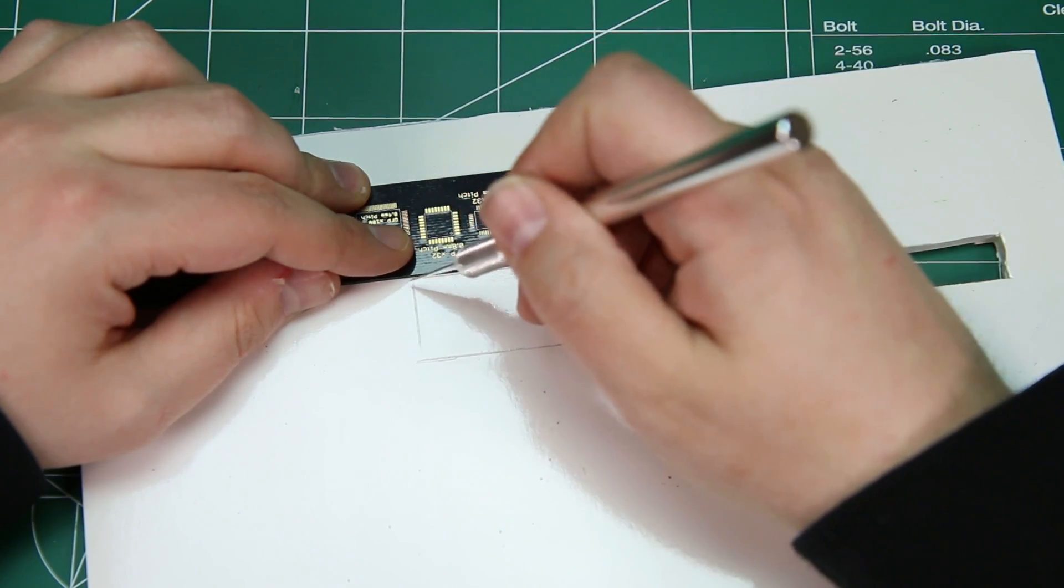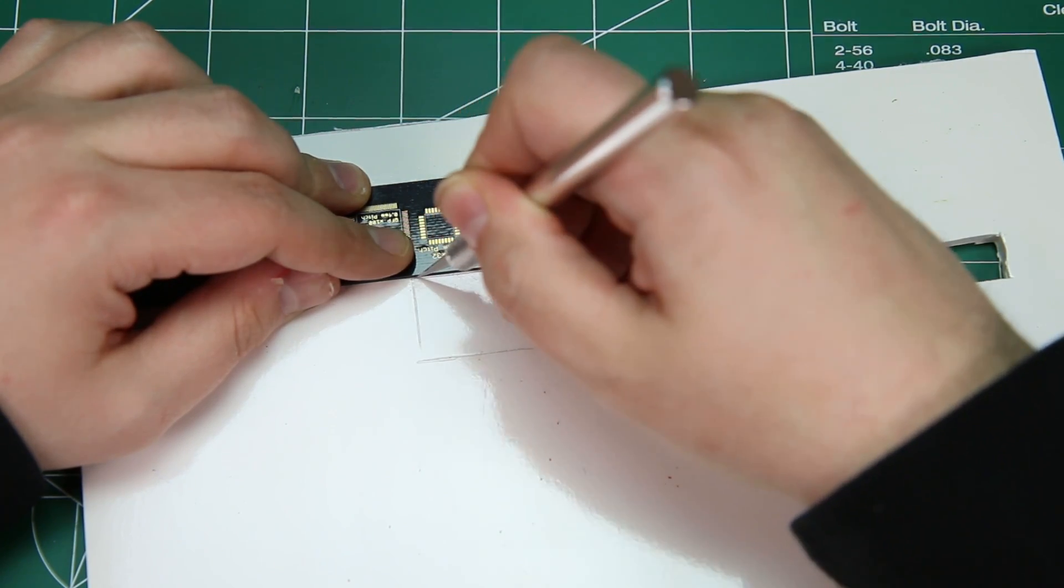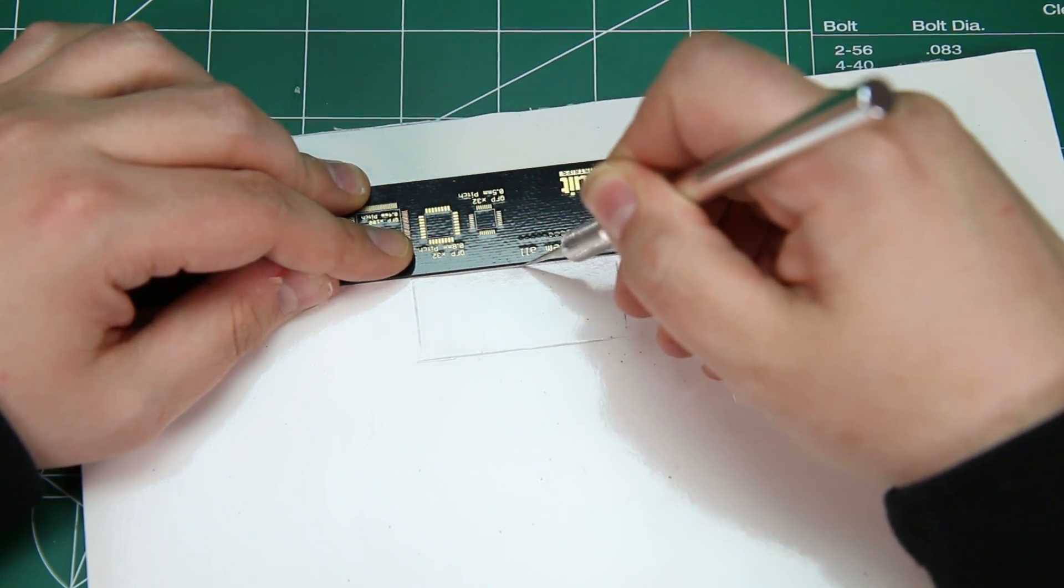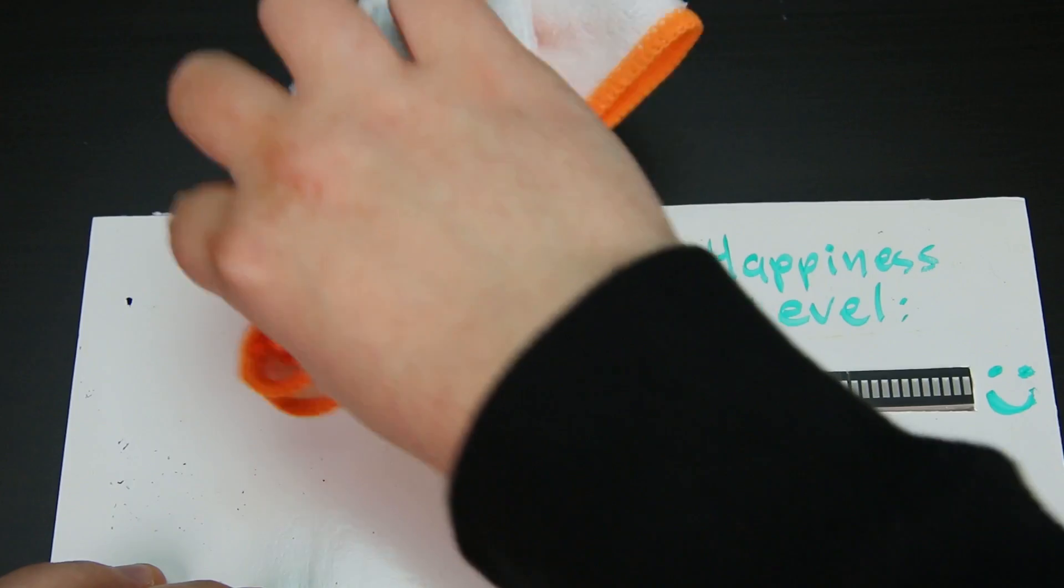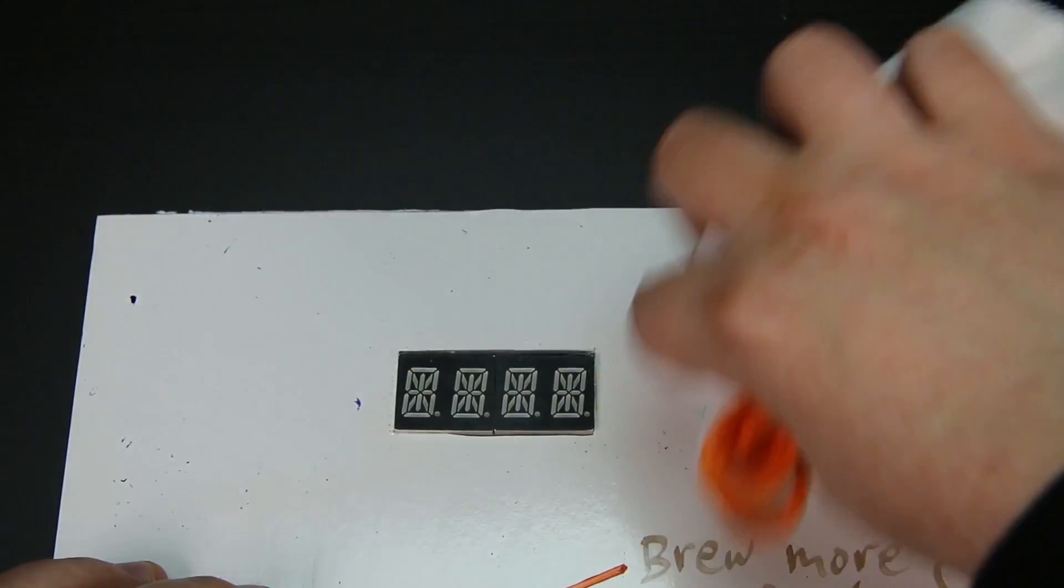Using whiteboard or chalk foam board you can build a reusable dashboard by cutting holes for each display. When you want to change the dashboard just erase the labels and you've got a blank slate for displaying any new data.